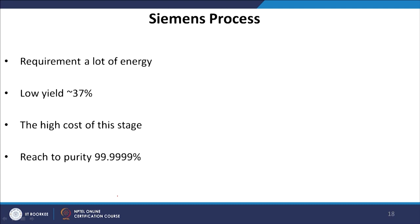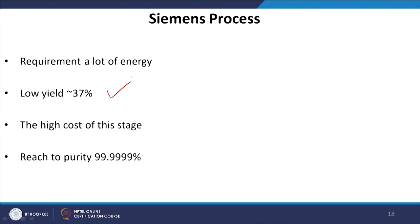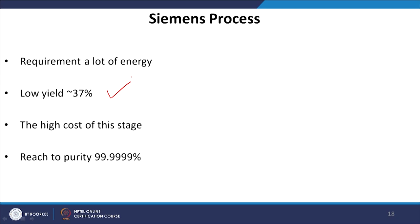The Siemens process has some disadvantages. One major disadvantage is that it requires a lot of energy, which is the main reason single crystal silicon solar cells are so costly. The yield is also low — around 37%. In industry, high yield and low production cost are desirable. However, the advantage is that purity of 99.9999% or higher can be achieved.